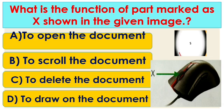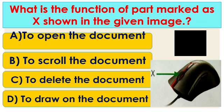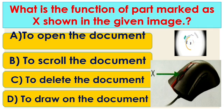Question number 16: what is the function of the part marked as X shown in the given image? Options are A. To open the document, B. To scroll the document, C. To delete the document, and D. To draw on the document. First identify the picture — this is a computer mouse. The circle button marked X is used for scrolling, so option B is the correct answer.